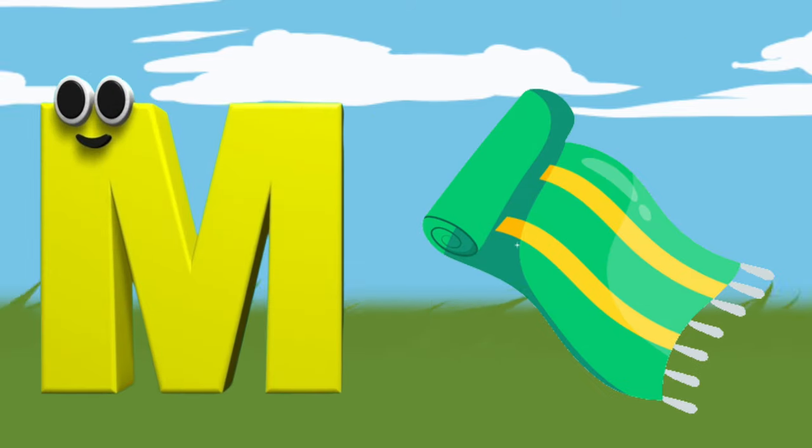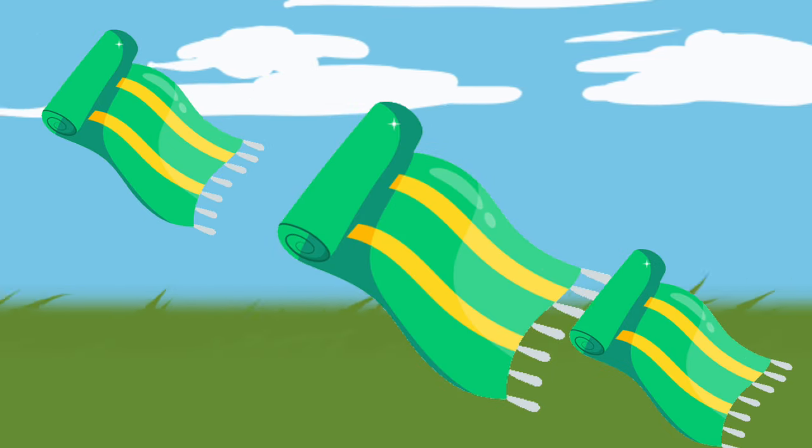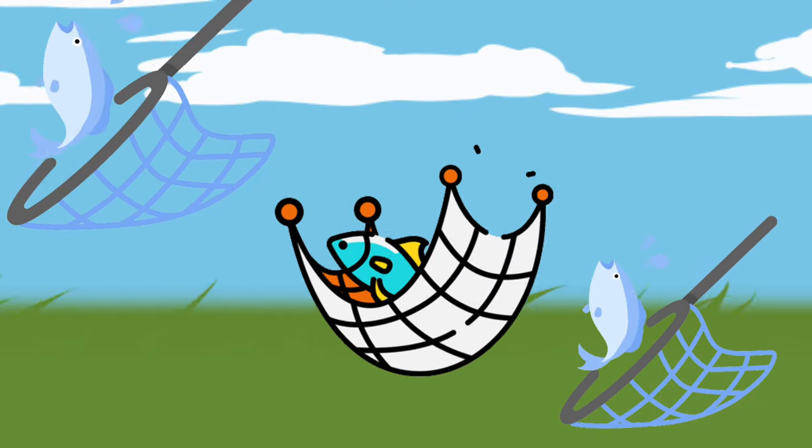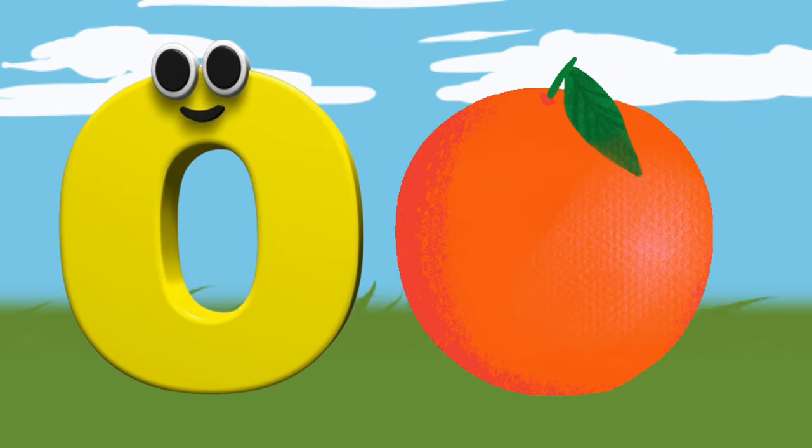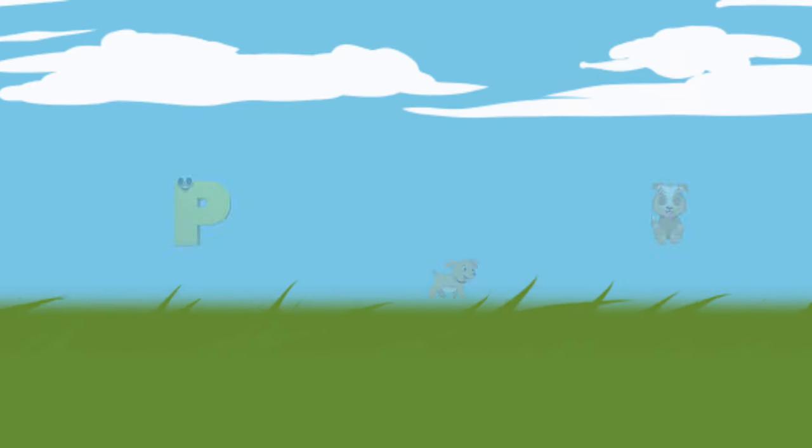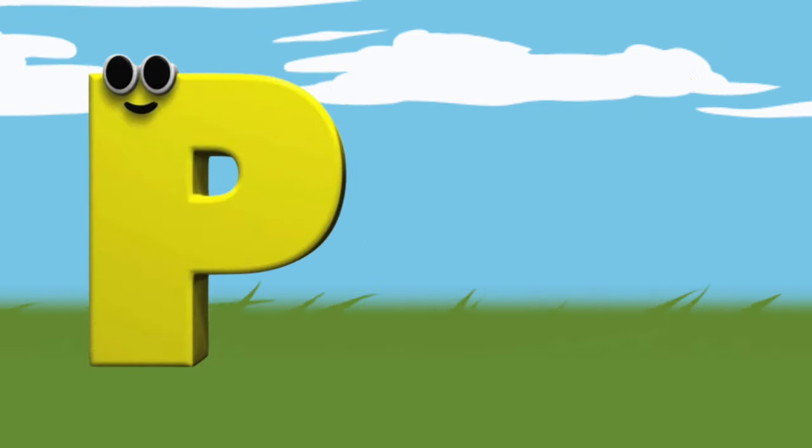M is for Mat, m-m-mat. N is for Net, n-n-net. O is for Orange, o-o-orange. P is for Pet, p-p-pet.